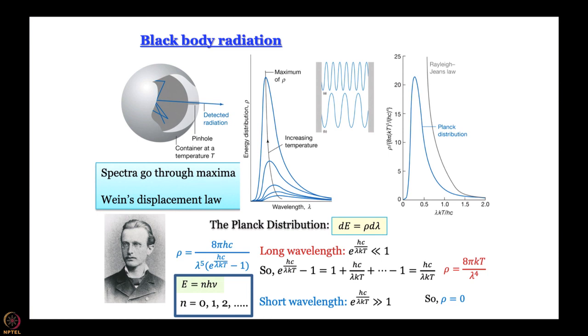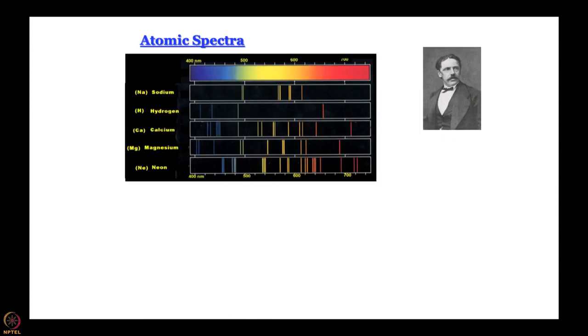The name quantum itself comes from here - quantum means a packet. With this background and knowing that the Rutherford model did not really work because classical mechanics requires the electron to give out energy continuously and therefore spiral onto the nucleus, and also with another experimental result - atomic spectra - Bohr formulated his model.